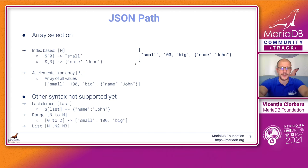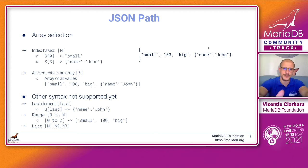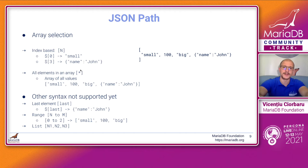Now let's look at array selection. JSON has arrays, which are an ordered set of values. The values can be strings, numerals, other objects, or tokens such as true or false. Arrays are indexed starting from zero, so $[0] gets you the first element and $[3] gets you the fourth element. That's useful for point selects, but usually we're interested in getting a list of all values — and you can do that with the star notation. This is going to be very useful for JSON Table, which we're going to see next.